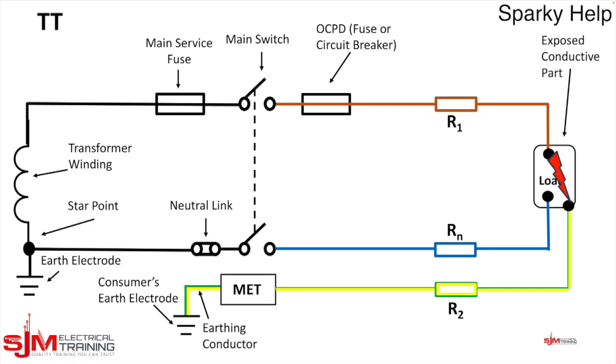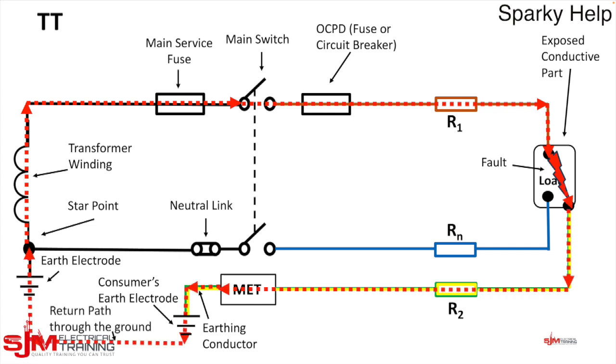Let's introduce the fault and label it as so. We want a fault of negligible impedance. So there's our fault, and now current will flow, and it will flow in this direction, down through there, and then through the earth. Through the ground is the return path. So there we have the earth fault loop path for a TT installation.